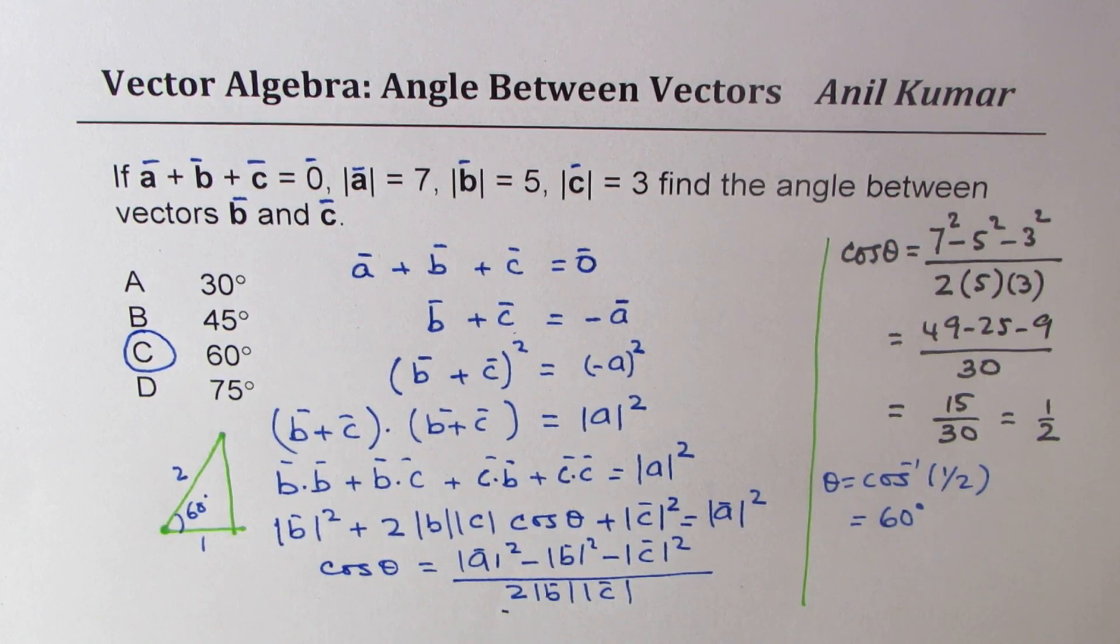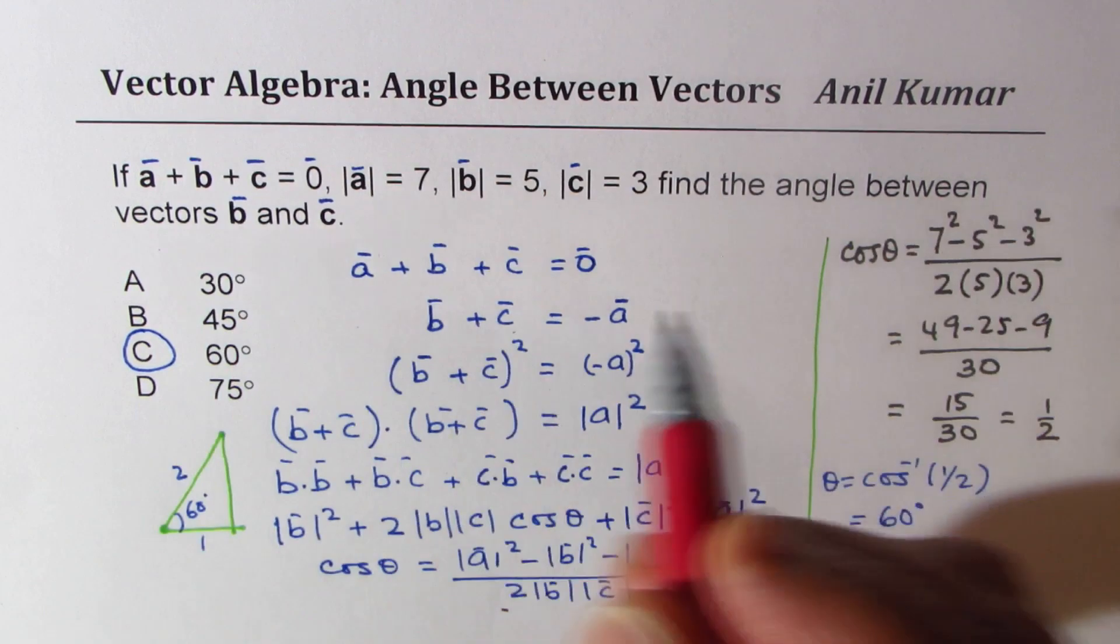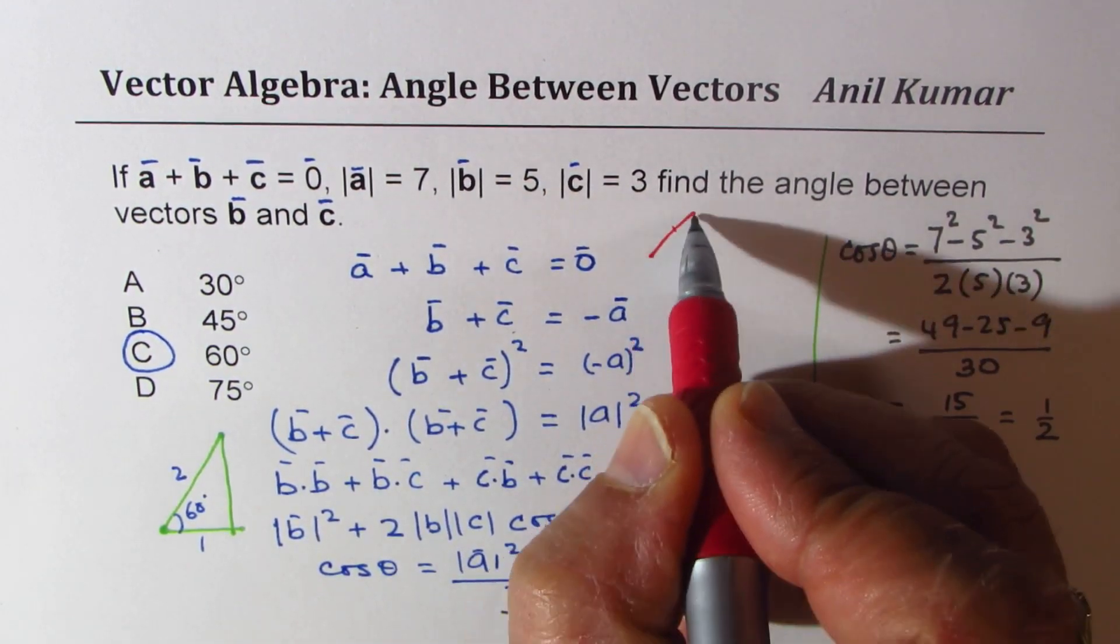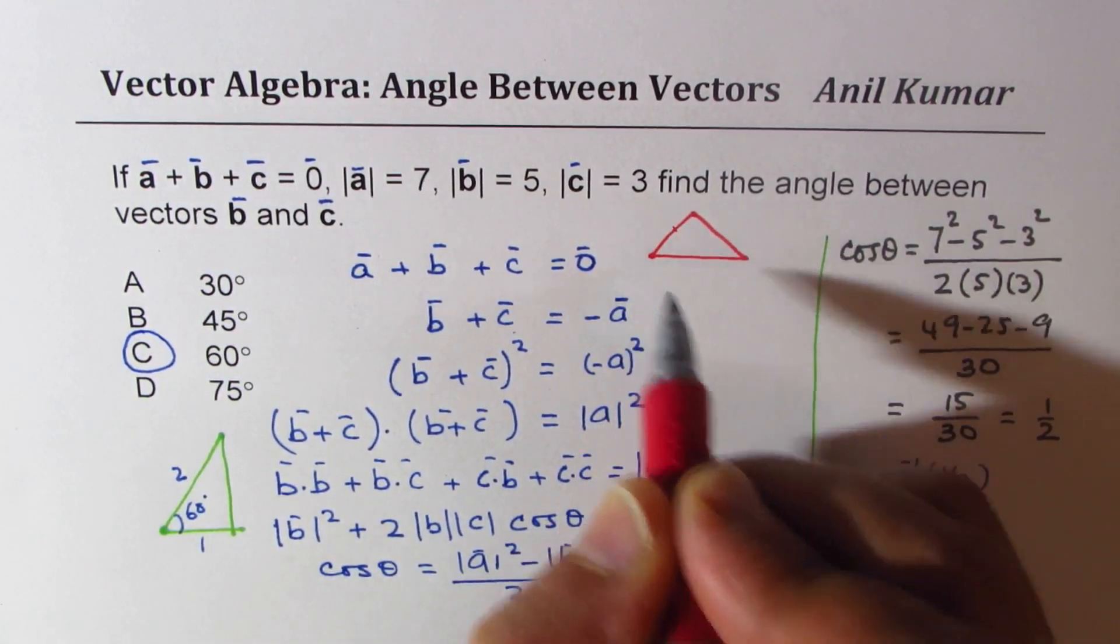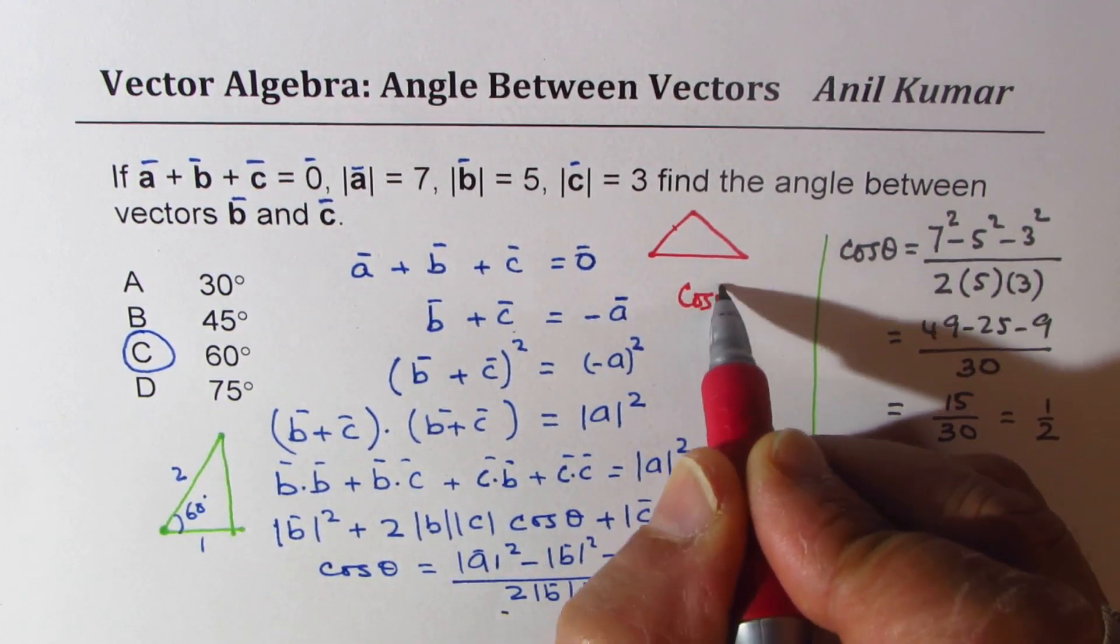Now the trick here is, if you are given three vectors, that means they form a triangle. So we have a triangle. In this triangle you could actually apply cosine law.